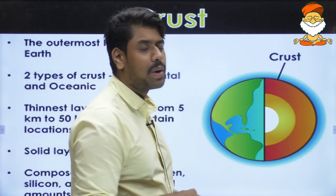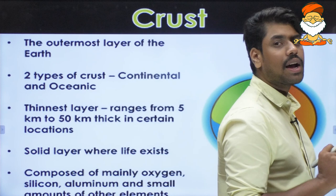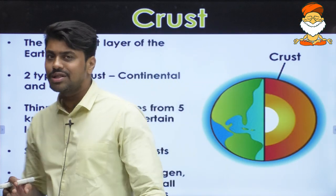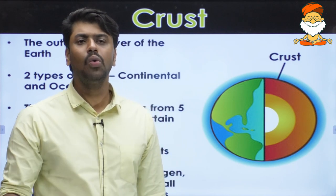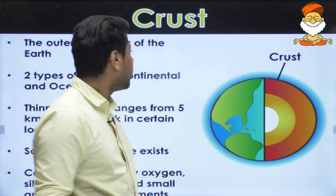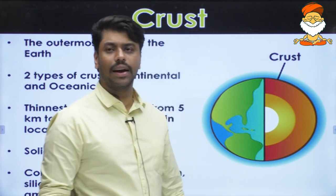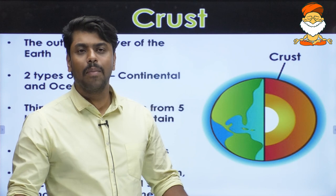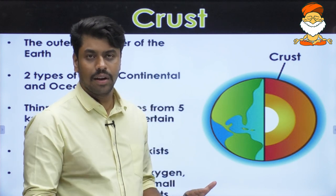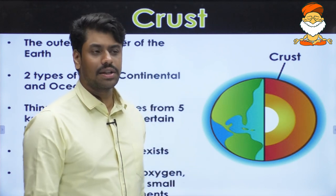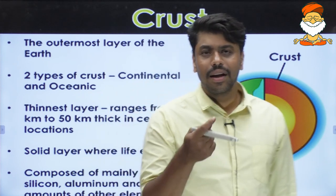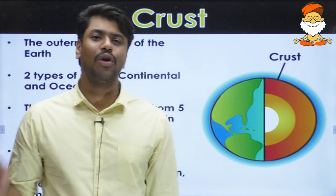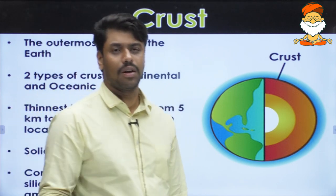After the mantle, we come to the crust — a very thin outermost layer, just like the small brown portion on the edge of a bread slice. The total mass of the crust is just about 1.14% of the total Earth — very, very small.